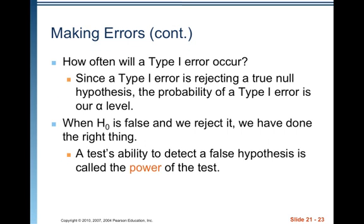How often will a Type 1 error occur? Since a Type 1 error is rejecting a true null hypothesis, the probability of a Type 1 error is our alpha level. So once you set your alpha level, you're setting your probability for a Type 1 error. When the null is false and we reject it, we have done the right thing — that's the whole reason we perform a hypothesis test. We want evidence against the null.